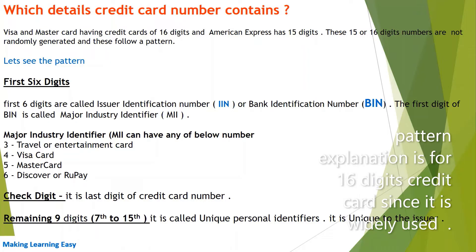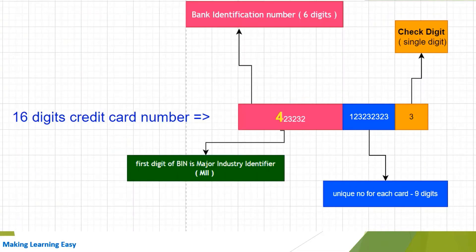Then there is the check digit — the check digit is the last digit of the credit card number, that is the 16th or 15th digit. The remaining digits from the 7th to the 15th are called the unique personal identifiers, which are unique to the issuer. Here I have drawn a diagram to explain it better.